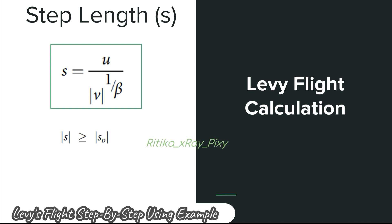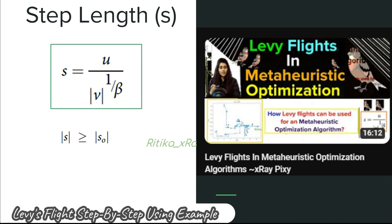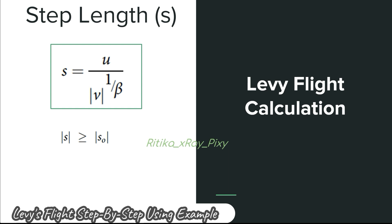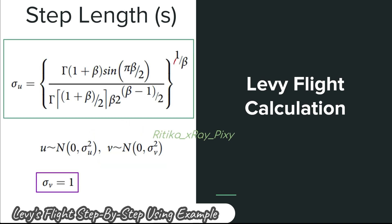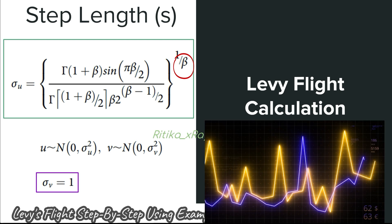Now you can see the basic equations used for the step size calculation in Lévy's flight. Here u and v values are drawn from the normal distribution, where u represents the random jump and v represents the random direction. Small s is the step size and s-naught is the smaller step size. Beta is the power law index and its value must be between one and two — this parameter controls the distribution of step size.